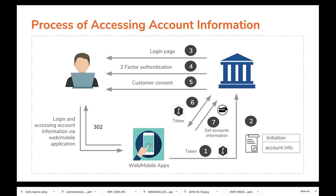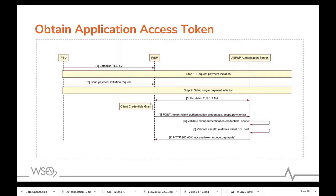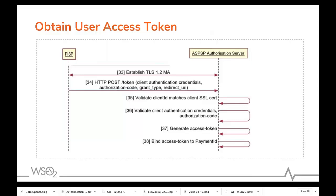Let's further discuss how each step in this process is secured. For the application access token, the main validations are: the scope needs to be validated against the scopes of the subscribed APIs, and requests need to be authenticated to check whether they come from a valid user. Also, the client ID sent in the request should be the same as that in the transport certificate. Similarly, the user access token request should also be validated, and in addition, the request will contain the authorization code and redirect URI which also need to be validated.